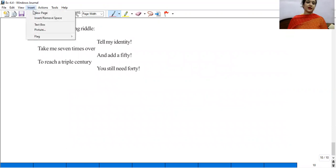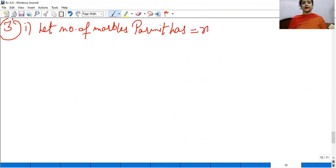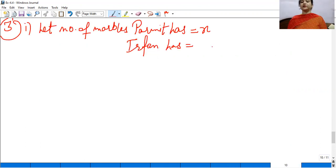So, let number of marbles Parmeet has be equal to x. And number of marbles Irfan has. Irfan says he has 7 marbles more than 5 times. 7 marbles more so plus 7. 5 times the number of marbles Parmeet has. 5 times more than 5 times.